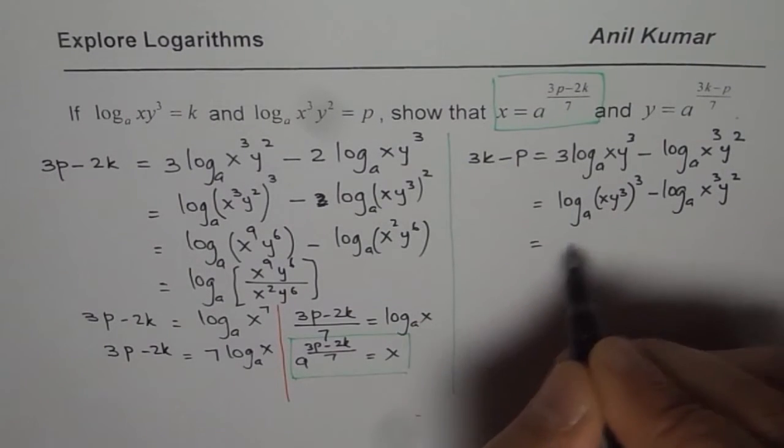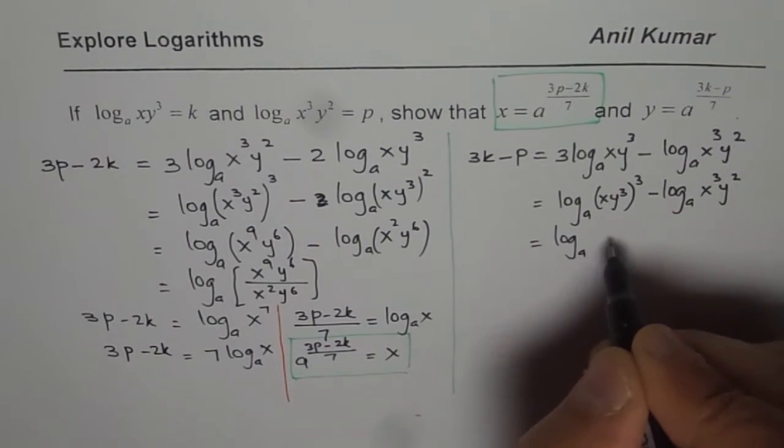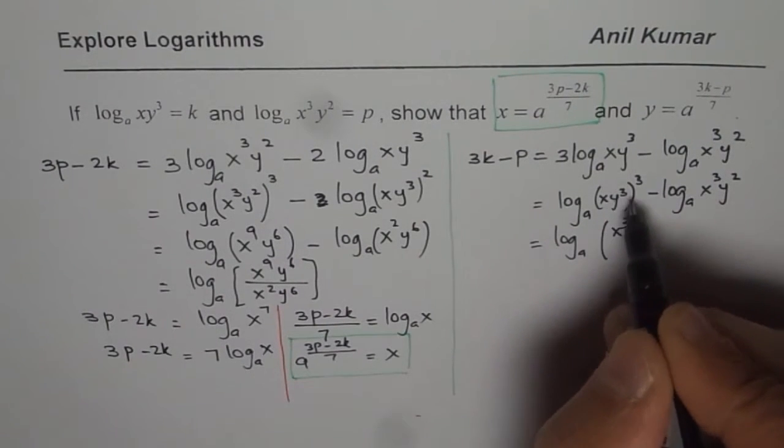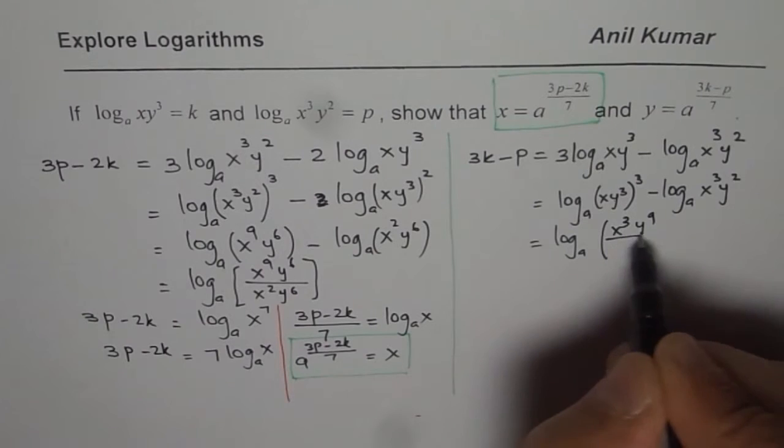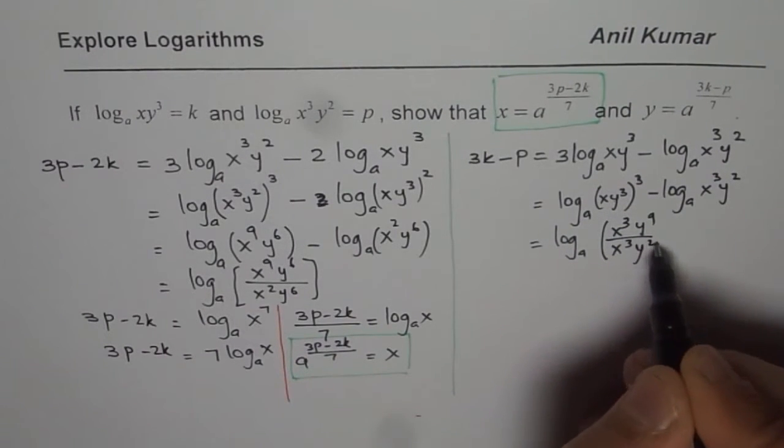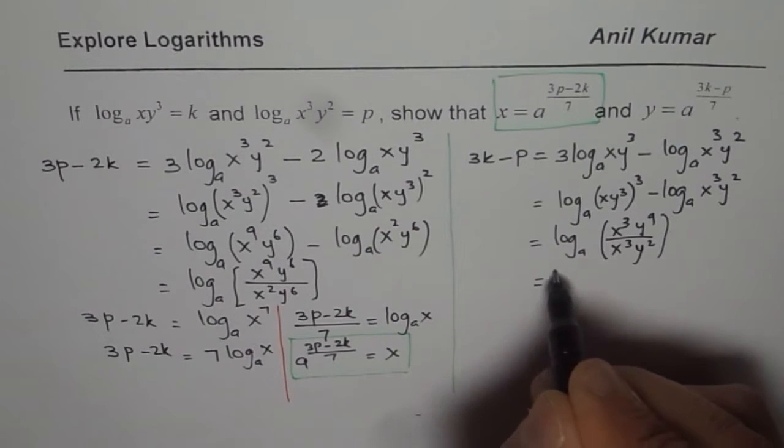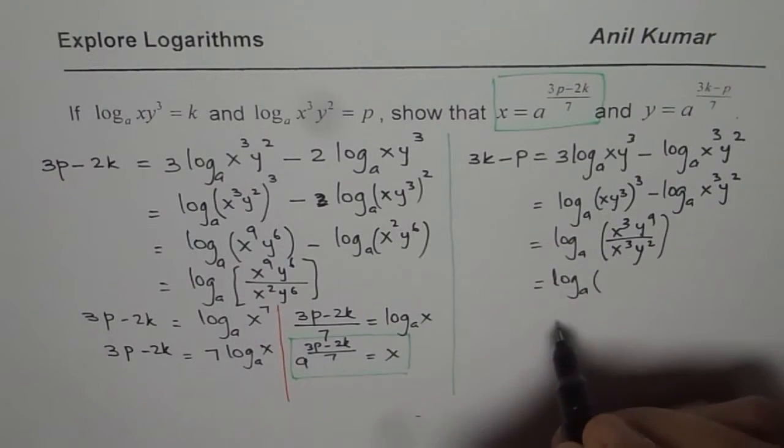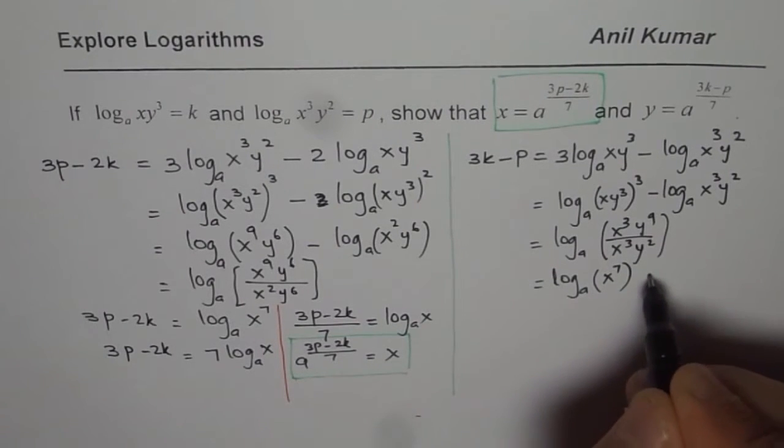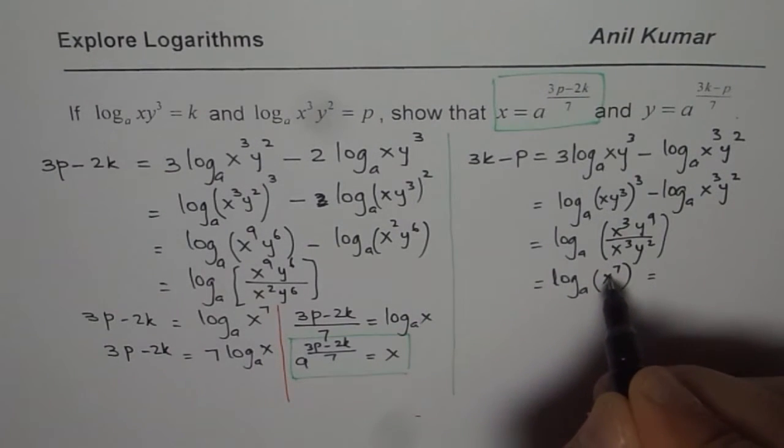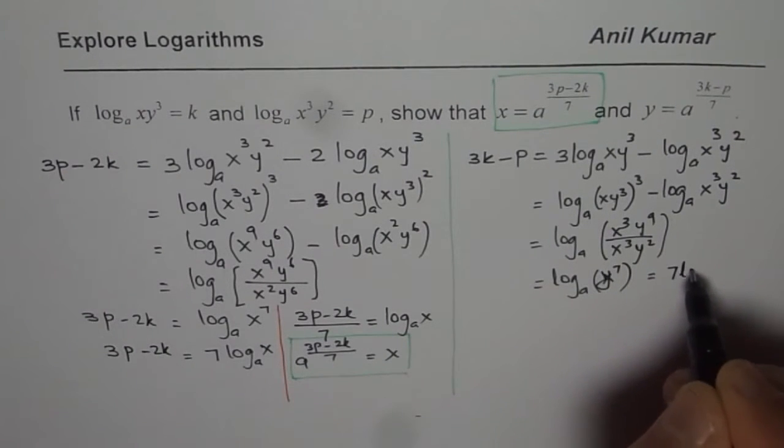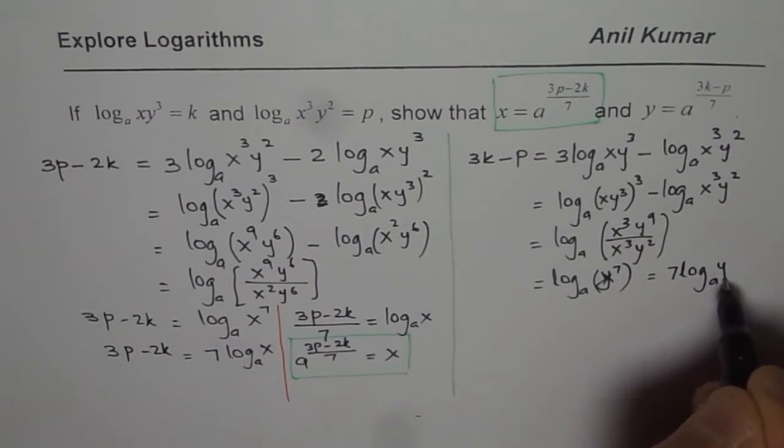Now this minus means I have to divide, quotient. So first I will do x³y⁹ minus x³y². So that gives us log to the base A of - x³, x³ cancel out - y⁷. This could be written as y⁷. So this could be written as 7 times log to the base A of y.